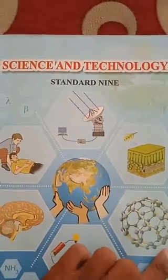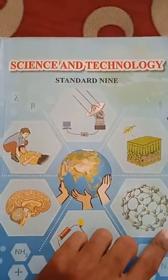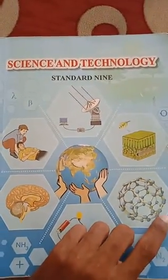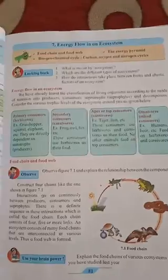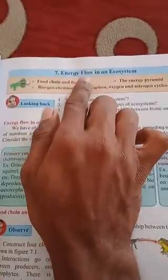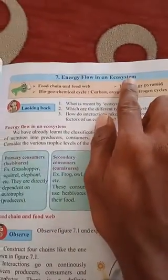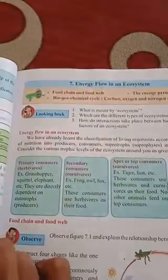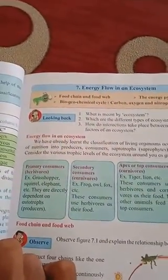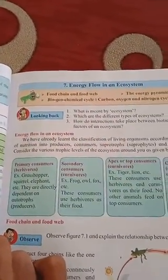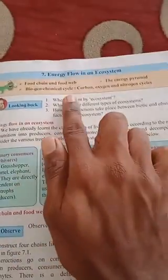Good morning everyone. Today we are going to study Science and Technology of Standard 9. In Science Part 2, chapter number 7 is Energy Flow and Ecosystem. We have already completed chapter number 6.